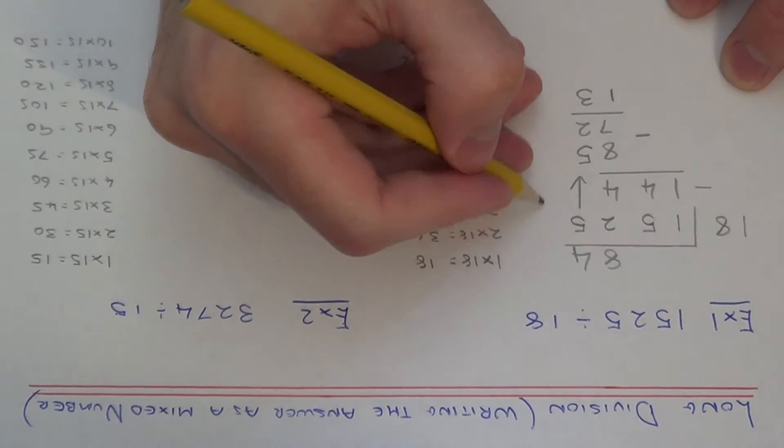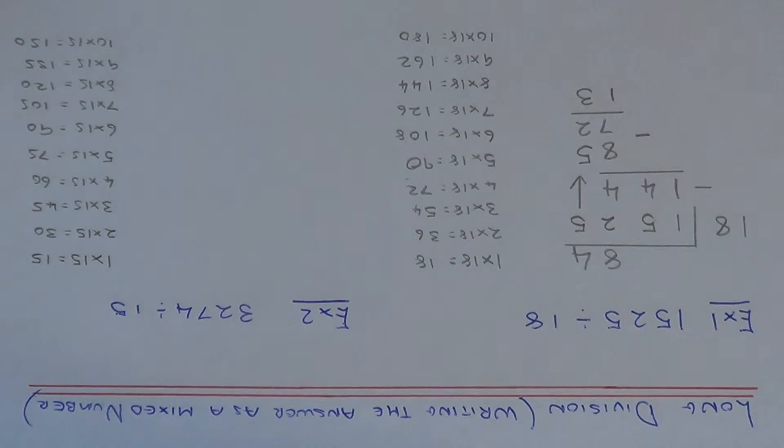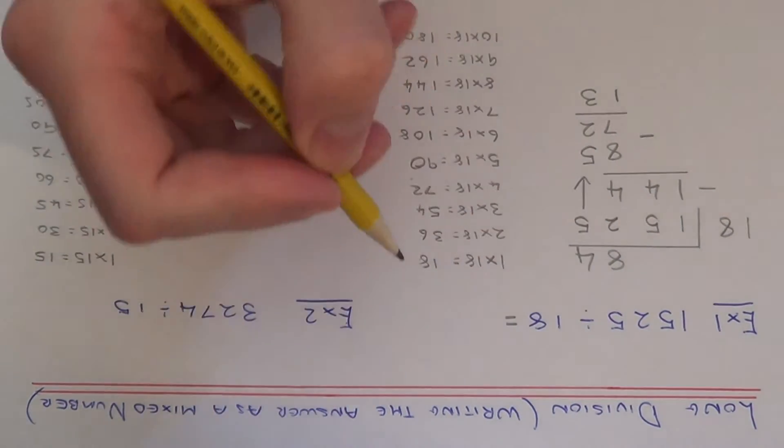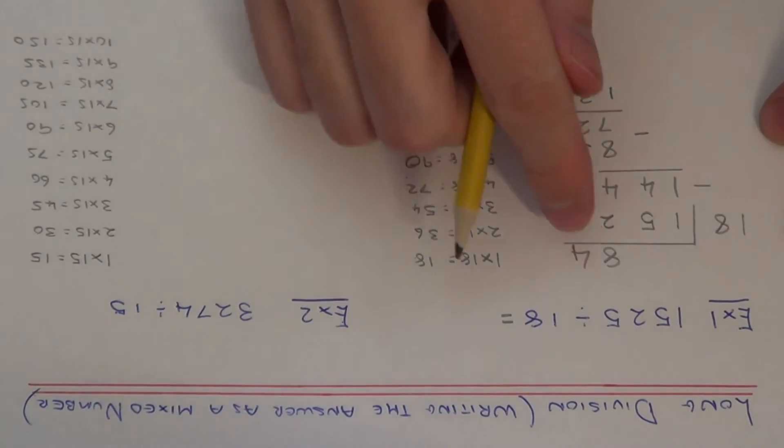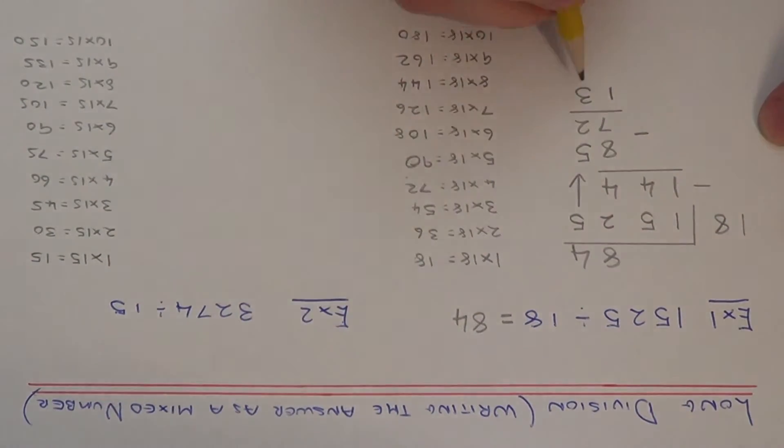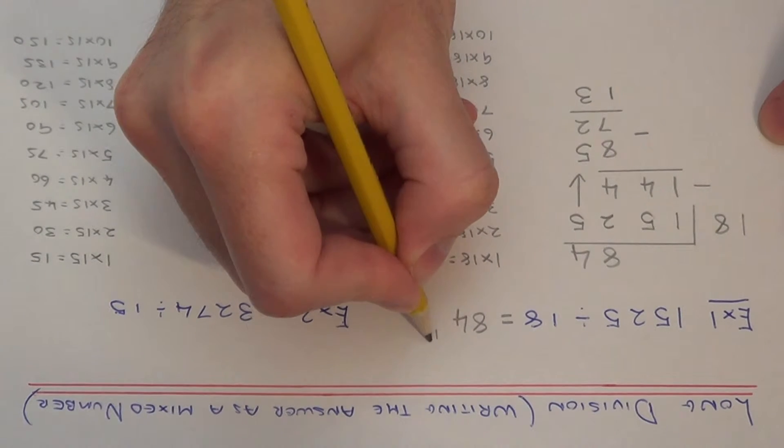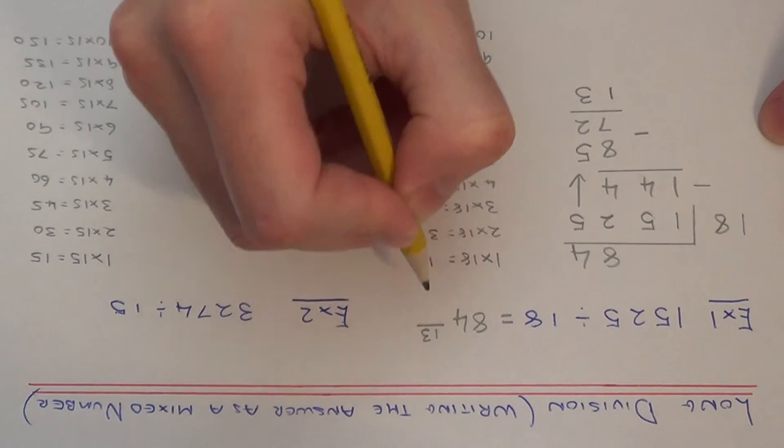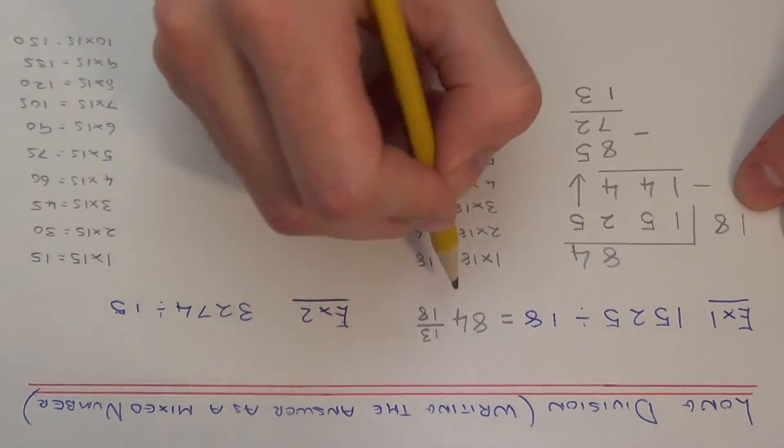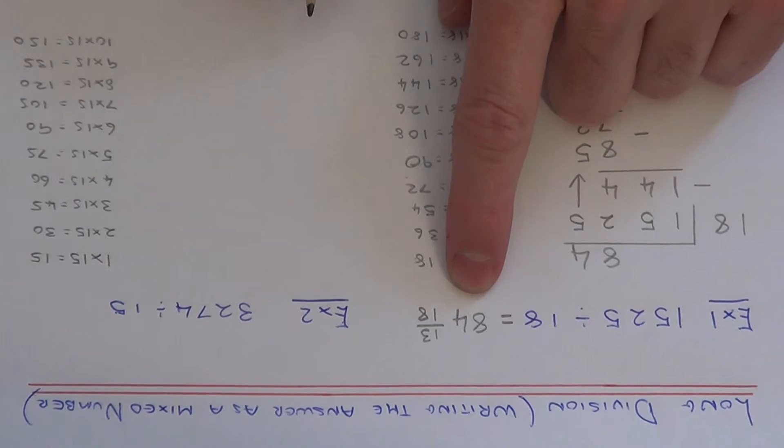We've got no more numbers now to bring down, so we're left with a remainder of 13. We just need to write our answer down as a mixed number. So our answer is 84, and then we need to put the 13 on the numerator. That's the remainder. And the number that we were dividing by was the 18, so we put that on the denominator. So our final exact answer is 84 and 13 eighteenths.